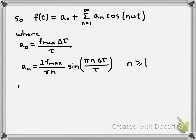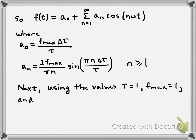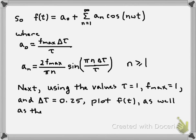The next part asks us to use τ = 1, f_max = 1, and δτ = 0.25, and plot f(t) as well as the sum of the first 11 terms. I didn't cover that on these slides, but I'll show what happens with this Fourier series for the sum of the first 11 terms in a separate video.